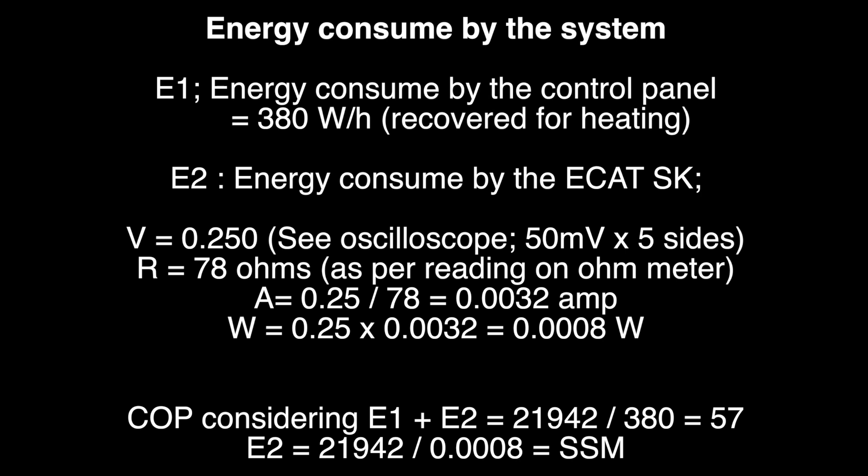As we have seen, we have 380 watt hours per hour of energy consumed. This is the total of energy that goes to the cooling system and the ECAT and everything else. The energy that is not consumed by the ECAT is completely recovered by the heat exchanger. The heat dissipated by the control panel is recovered with a COP of 0.9.